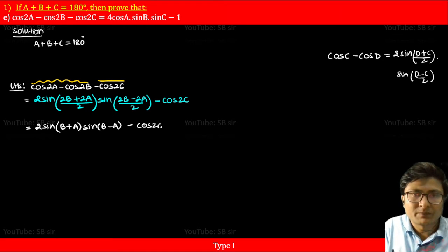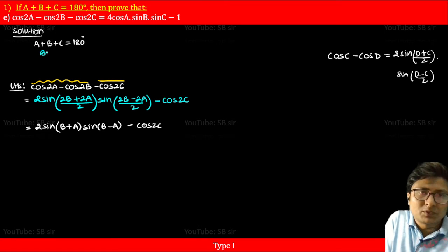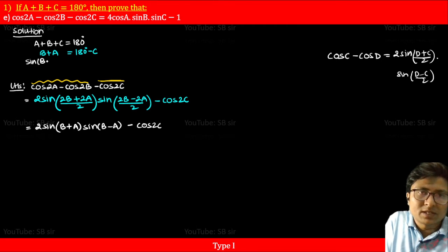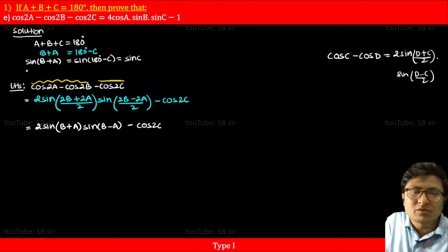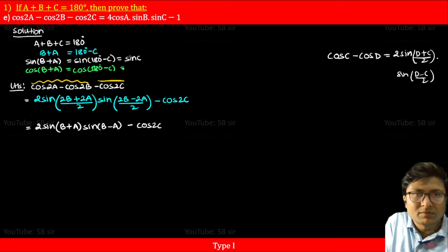Now, b plus a equals 180 degrees minus c from the given condition. Taking sin on both sides: sin(b plus a) equals sin(180 minus c), which equals sin c. Taking cos on both sides: cos(b plus a) equals cos(180 minus c), which by the formula equals minus cos c, since this lies in the second quadrant.